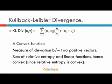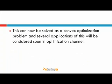KL divergence is a sum of convex functions plus linear functions, and therefore KL divergence is a convex function. It is a measure of deviation between two positive vectors — it gives a measure of how different two vectors are from each other. If you want to minimize the KL divergence between two distributions, you can solve this problem very efficiently using convex programming.